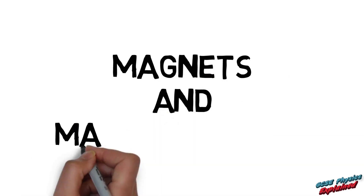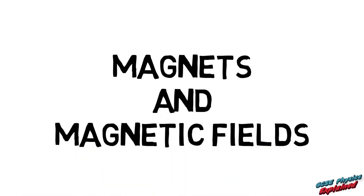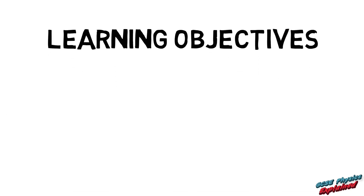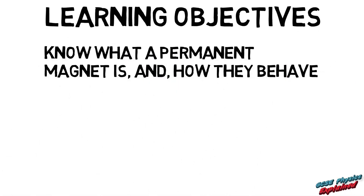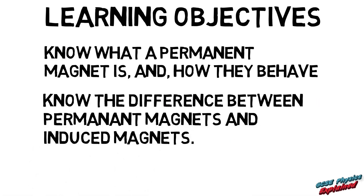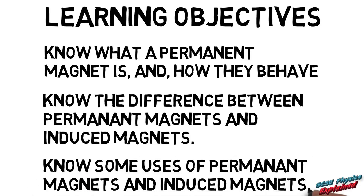Hello, it's GCSE Physics Explained. I'm going to tell you about magnets and magnetic fields. Learning objectives: at the end of this video you should know what a permanent magnet is and how they behave, know the difference between permanent magnets and induced magnets, and know some uses of permanent magnets and induced magnets.